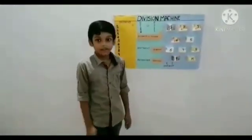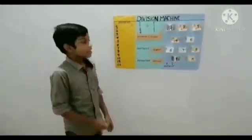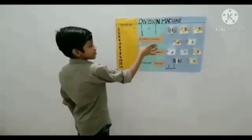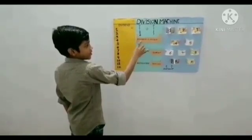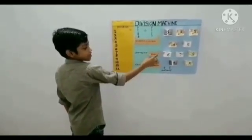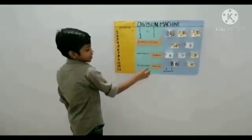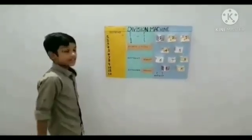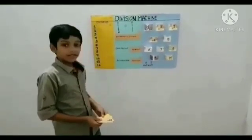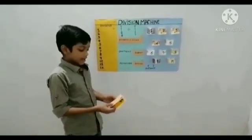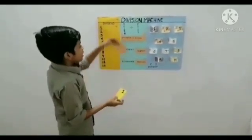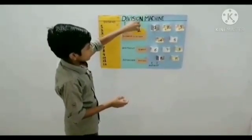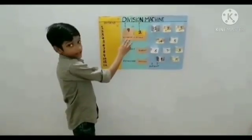Today I am introducing the division machine. Here is the division machine. This is the dividend and this is the question box. That is dividend and divisor. This is the question box and this is the remainder box. Now we make a question. Here I take 9 and 2. Dividend is 9 and divisor is 2.